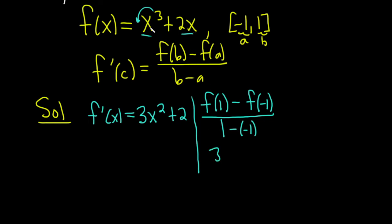Right because it's one cubed which is one, plus two times one. So it'll be one plus two, so three. Minus, and then f of negative one - it'll be negative one cubed, so that's negative one, and then two times negative one, so minus two. And on the bottom we have one plus one, so that's two.